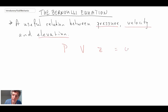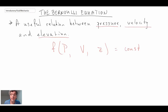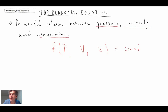We'll come up with a function for it, and it will be written in terms of a constant — some function of all three of these variables is equal to a constant. That's what we're going to get out of the Bernoulli equation. We'll begin with a control volume analysis using the linear momentum equation for a little piece of fluid between two streamlines.